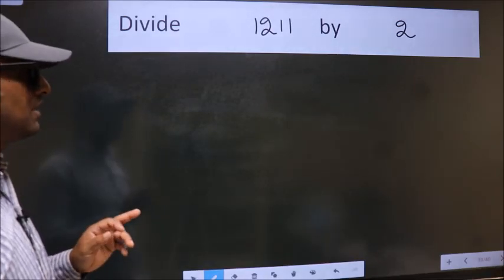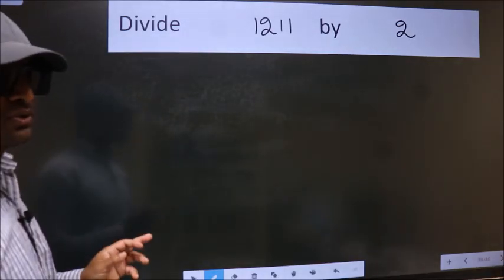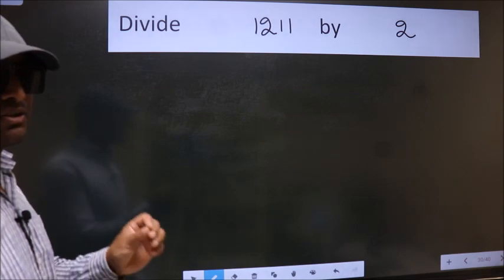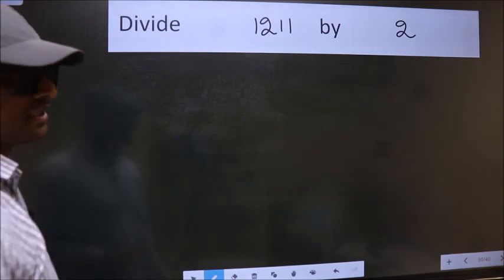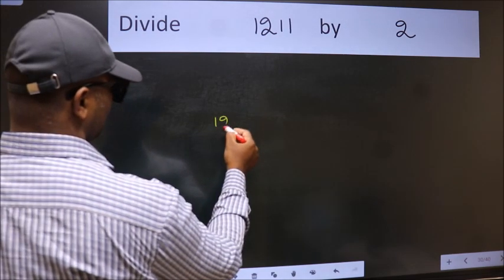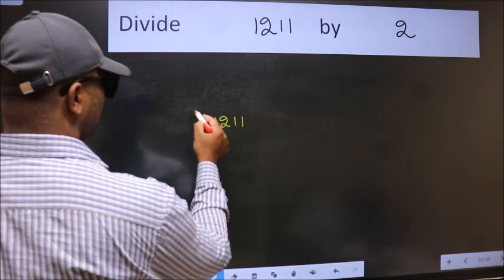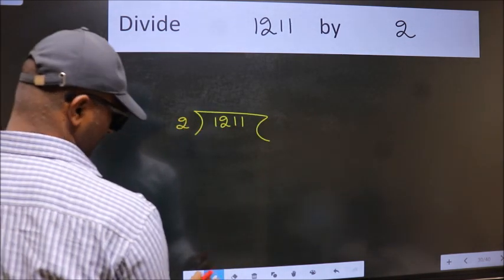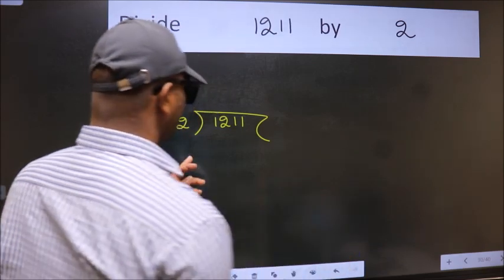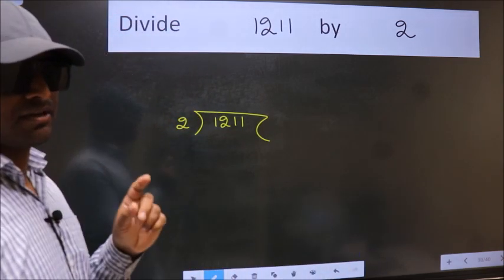Divide 1211 by 2. To do this division, we should frame it in this way: 1211 here, 2 here. This is your step 1.